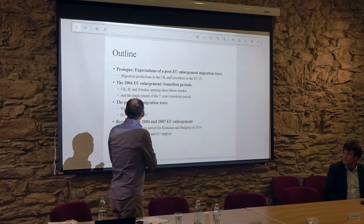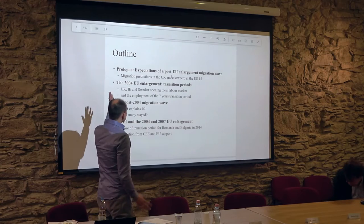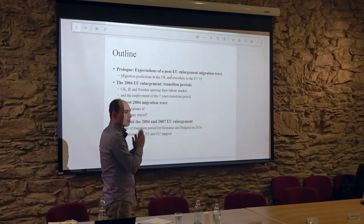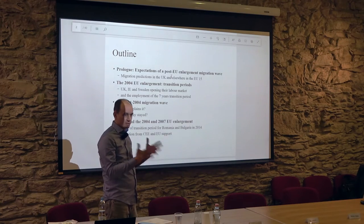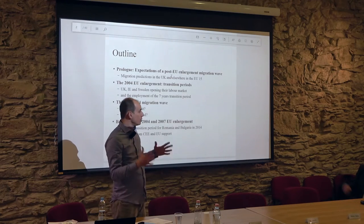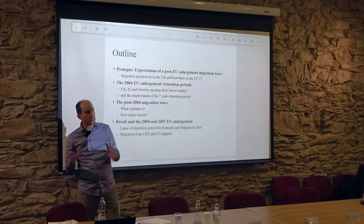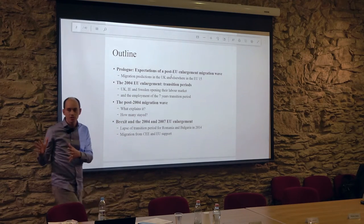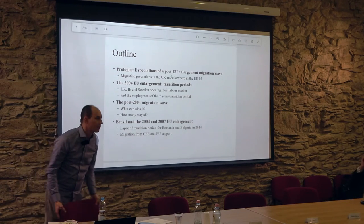The outline of what I will talk about in the next few minutes: first, what happened after the EU was enlarged in 2004 with regard to migration. In 2004, 10 new EU countries from the Central Eastern part of Europe, former communist countries, and two islands, Cyprus and Malta, became EU members.